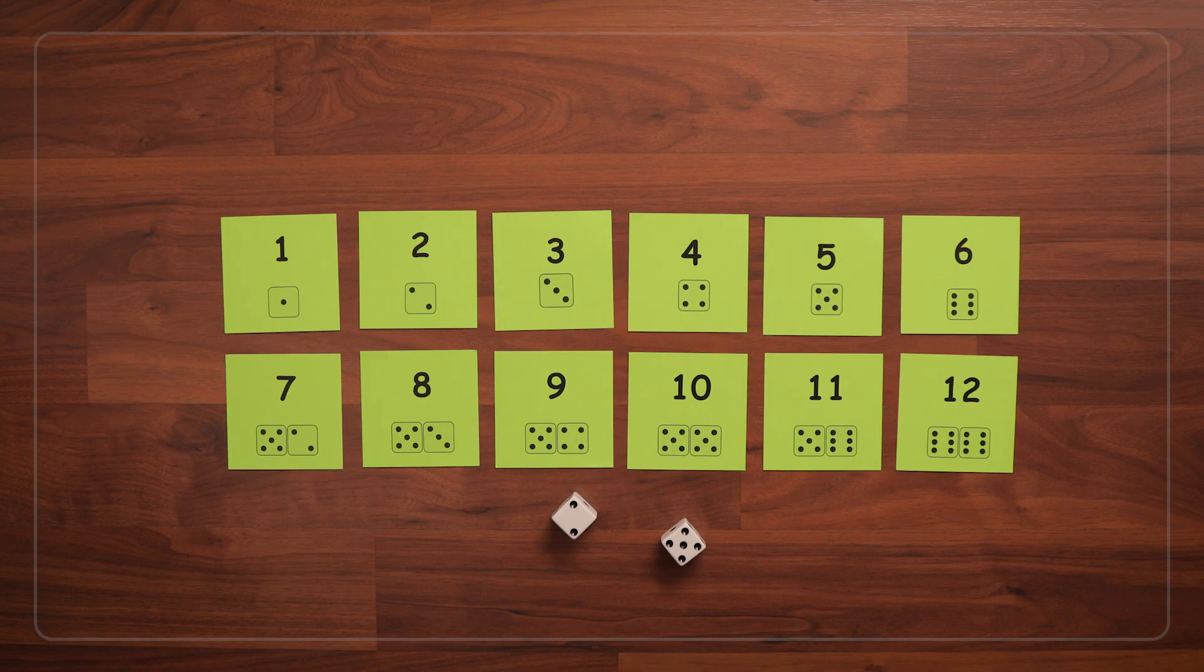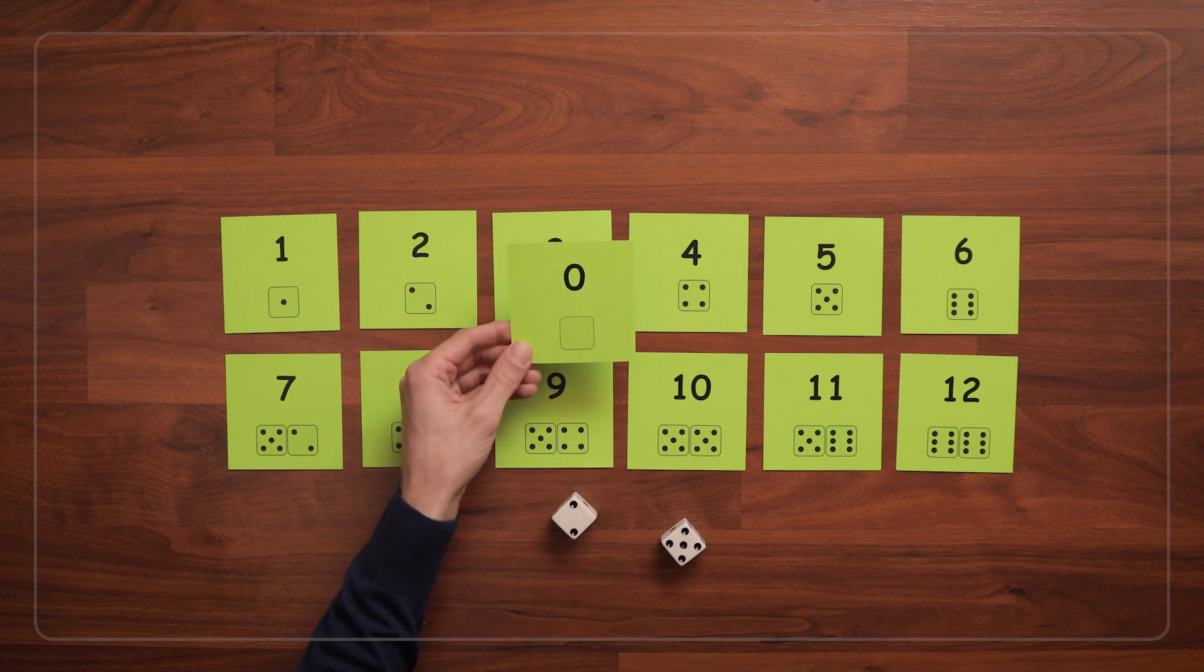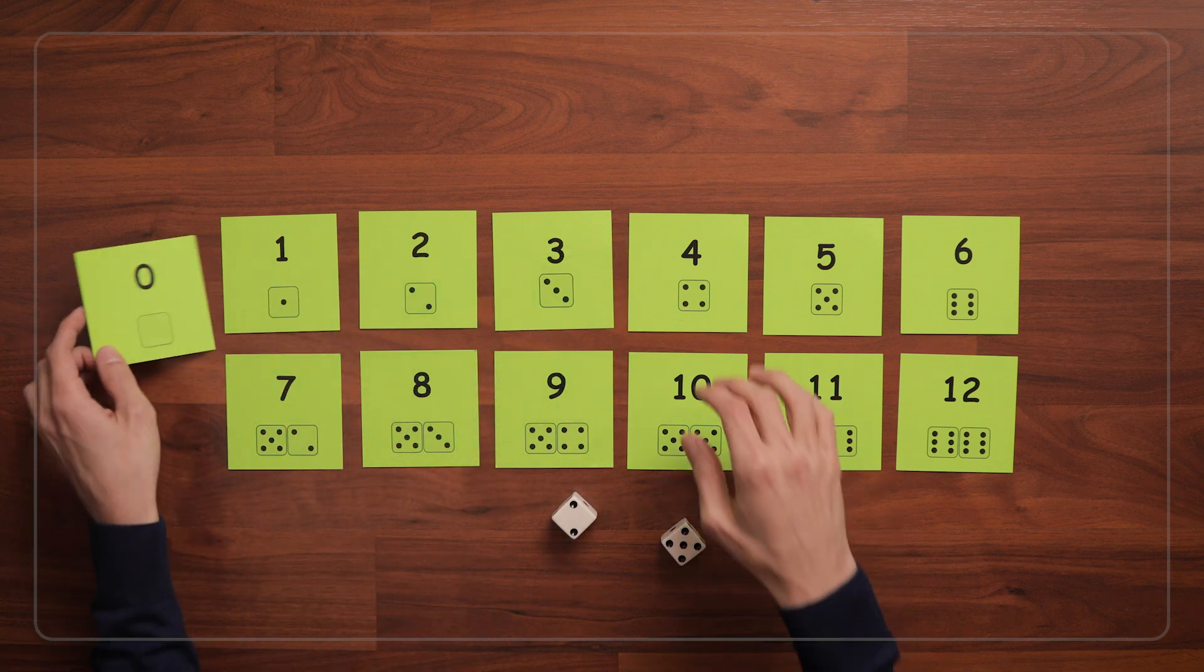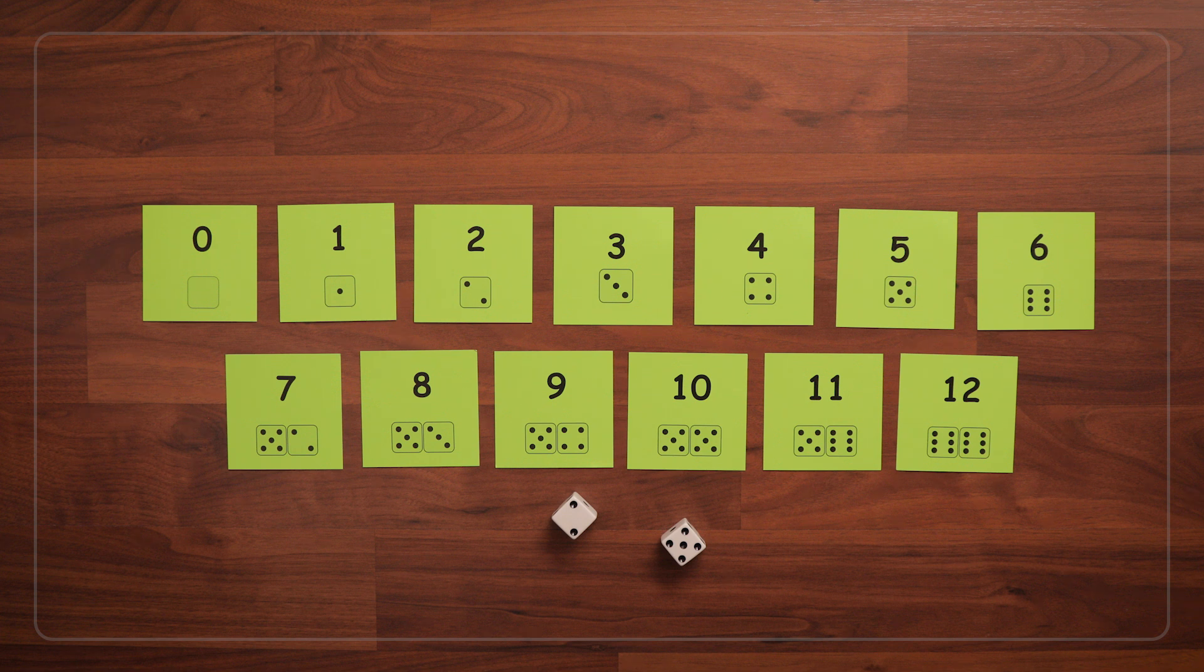Playing with subtraction also lets you play with the 0 card. So you can include the 0 card in your line, and then when you roll doubles, turn it over using subtraction.